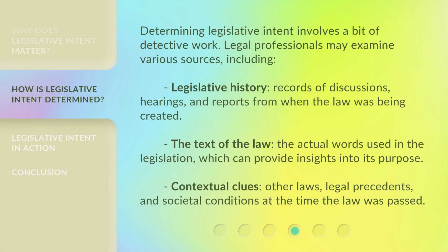Determining legislative intent involves a bit of detective work. Legal professionals may examine various sources, including: legislative history — records of discussions, hearings, and reports from when the law was being created; the text of the law — the actual words used in the legislation, which can provide insights into its purpose; and contextual clues — other laws, legal precedents, and societal conditions at the time the law was passed.